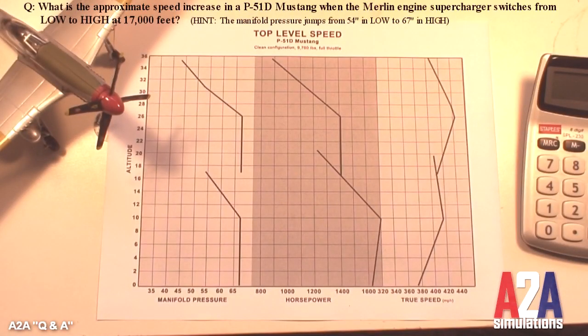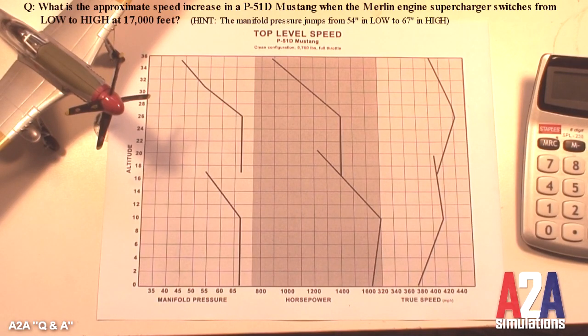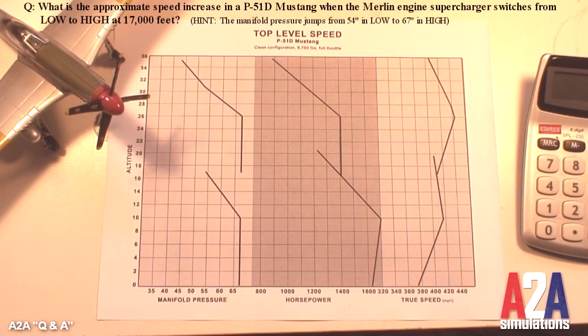On the A2A simulations forums, we offered a $50 gift certificate for the first person to answer the following question. What is the approximate speed increase in a P51D Mustang when the Merlin engine supercharger switches from low to high at 17,000 feet? And we give a hint that says the manifold pressure changes from 54 inches to 67 inches.